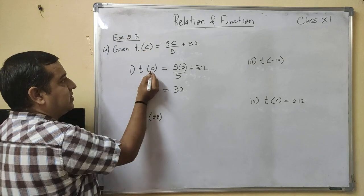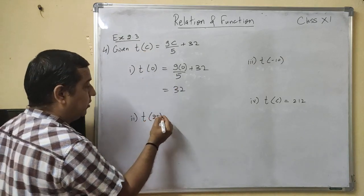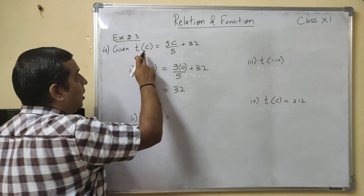9 into 0 upon 5 plus 32, 9 times 0 is 0, so this gives you 32. Means in degree Celsius when it is 0 degree, then in Fahrenheit it will be 32 degree.